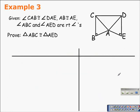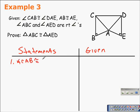Here we have a crazy diagram. We'll start off by writing our two-column proof with statements and reasons. The first statement is our given: angle CAB is congruent to angle DAE.